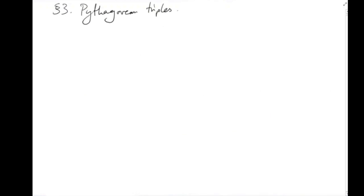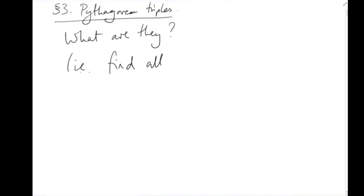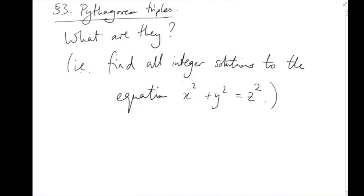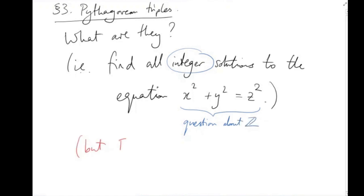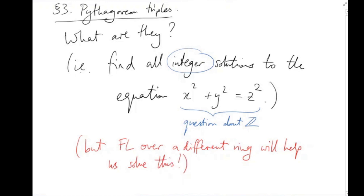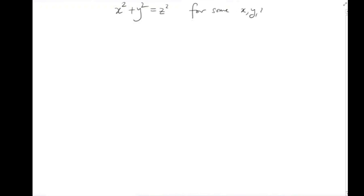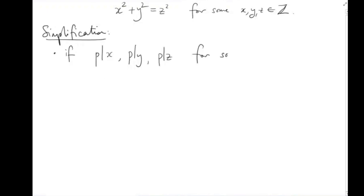Section 3: Pythagorean Triples. Let's turn our attention to the problem: what are the Pythagorean triples? In other words, can we find all integer solutions to x squared plus y squared equals z squared? On the face of it this is purely a problem about integers, but we'll see how the fundamental lemma over an unexpected ring helps us solve this. Let's suppose we have non-zero integers x, y, and z such that x² + y² = z².